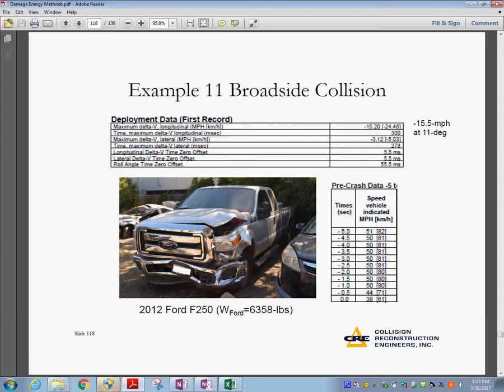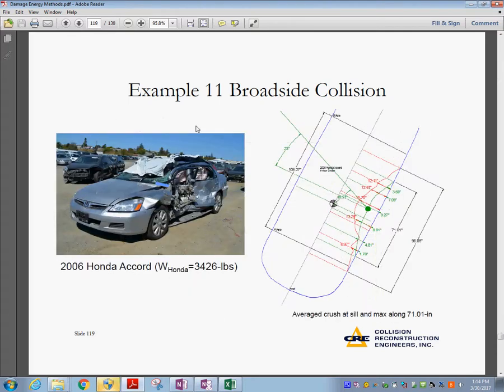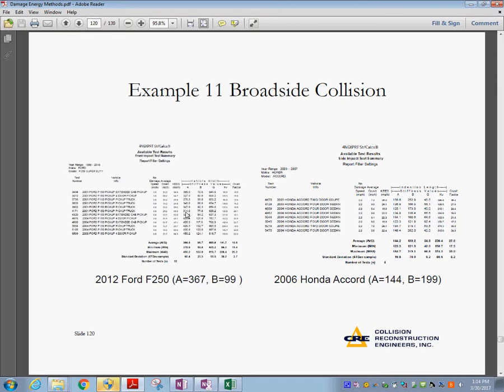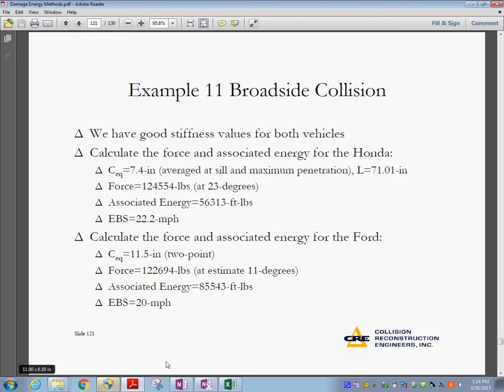Let's take a look at a different example in here. This is the broadside collision. You have for the F-250, 6,000 pounds car. These are data from the EDR. That's where it says deployment data. This is a crash site crash. These are the data taken for each vehicle. In this case, we have good stiffness values for both vehicles.